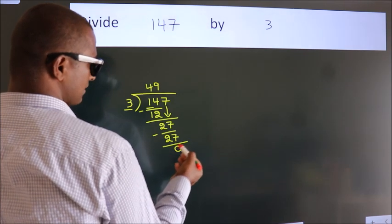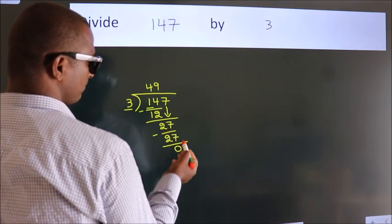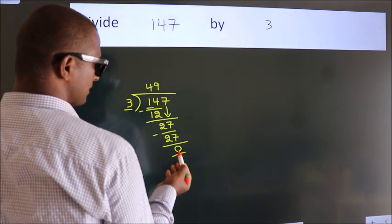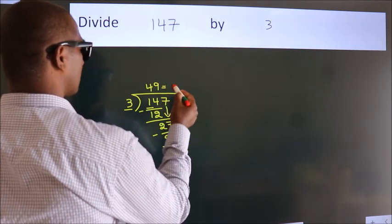After this, no more numbers to bring down. And we got remainder 0. So this is our quotient.